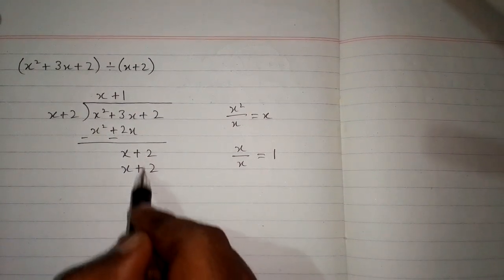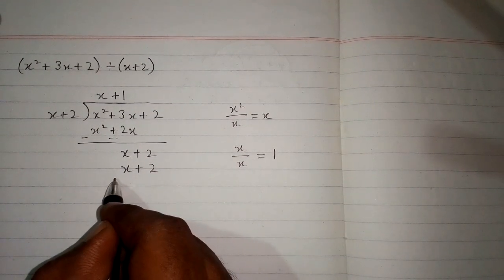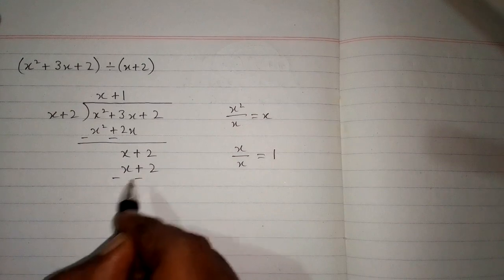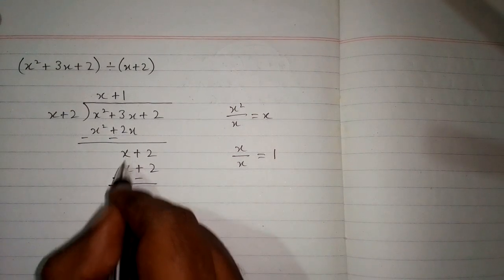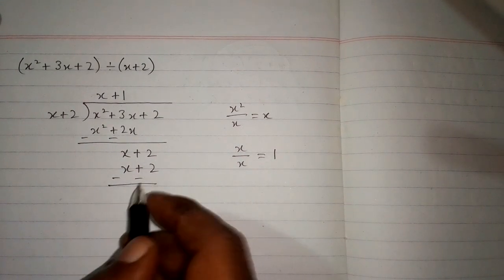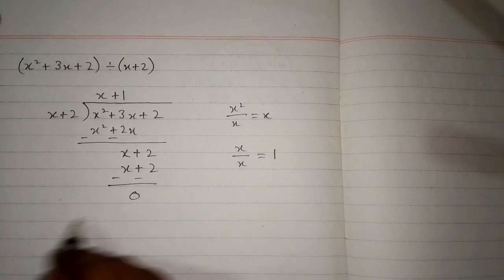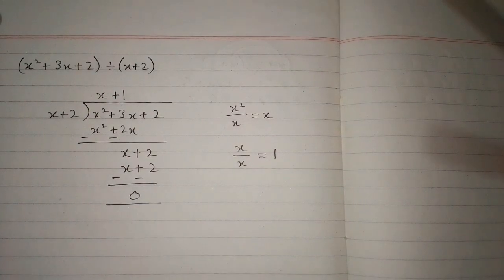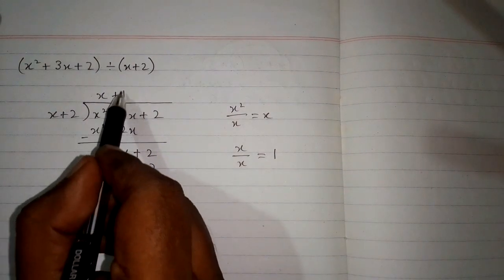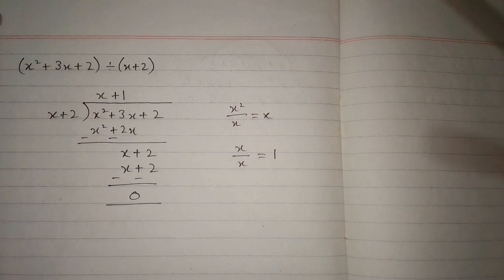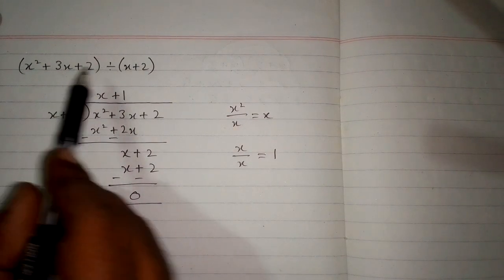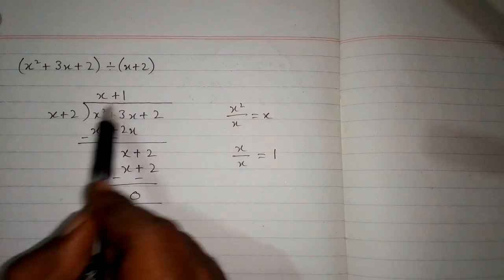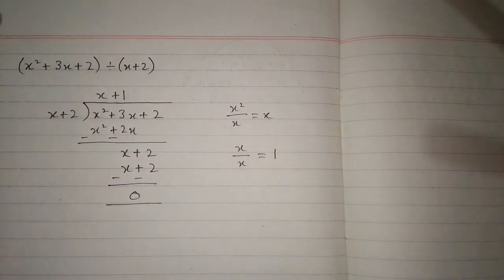Now we subtract these expressions. x minus x is 0 and 2 minus 2 is 0, so the remainder is 0. This is the quotient of the division. When we divide x squared plus 3x plus 2 by x plus 2, we get x plus 1.